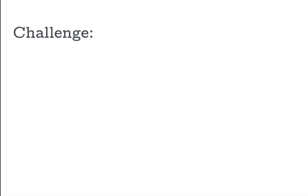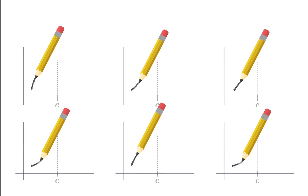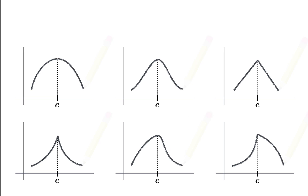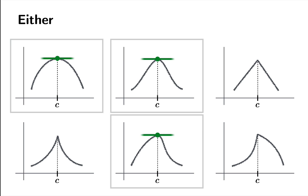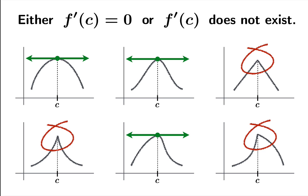We'll start with a simple challenge: try to draw the graph of a continuous function that has a relative maximum. However many times you try to do this, you should find that one of two things has to happen. If we call the argument at which you get your relative maximum c, you'll find that either f'(c) has to be zero at your relative max, or f'(c) does not exist.